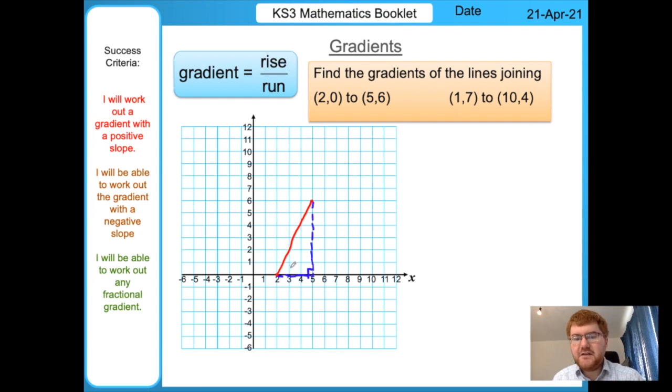I'm going to draw a horizontal line across until it makes a right angle triangle. I find the height of the triangle and the width. If we take the height, we go 1, 2, 3, 4, 5, 6, so this is going to be 6.